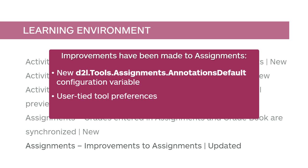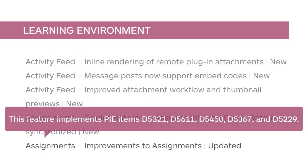This release introduces user-tied tool preferences. When instructors select tools, such as annotations, to use in an assignment submission, Brightspace remembers those preferences and carries them through subsequent assignment creations. When navigating back or closing a browser, a new failure-to-save notification warning appears, prompting instructors to save their changes or actively choose to proceed without saving.